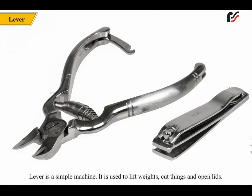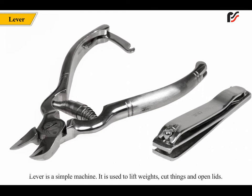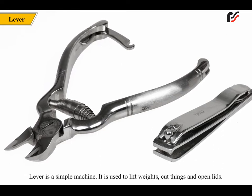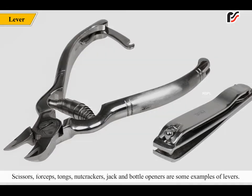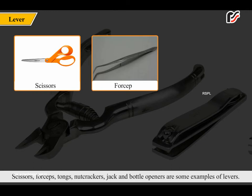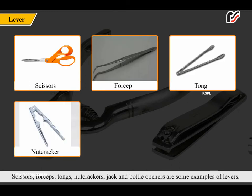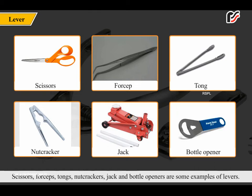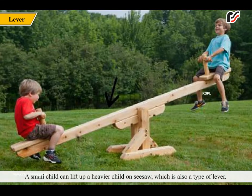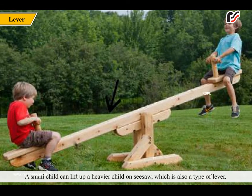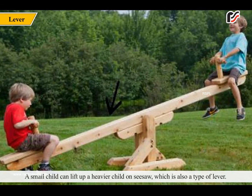Lever is a simple machine. It is used to lift weights, cut things and open lids. Scissors, forceps, tongs, nutcrackers, jack and bottle openers are some examples of levers. A small child can lift up a heavier child on a seesaw, which is also a type of lever.